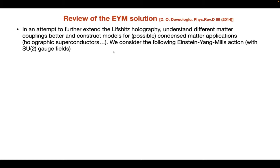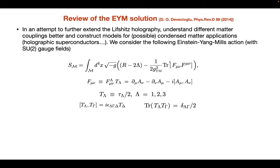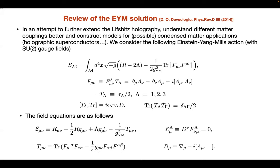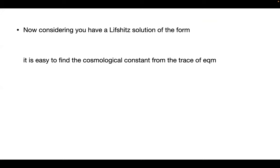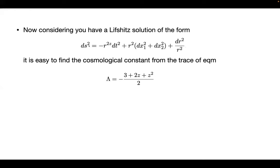Let's go to the review of this Einstein-Yang-Mills solution. This is the 2014 solution, and I have the following action: Einstein plus the usual Yang-Mills, the simplest Yang-Mills coupling. I have SU(2) gauge fields, with capital Greek letters for the group index 1, 2, 3 and Latin indices for the spacetime. The taus are the Pauli matrices with their basic properties. The field equations as usual give the energy-momentum tensor, which has trace zero, and you can nicely use this conformal property — setting the trace equal to zero, you can find the cosmological constant.